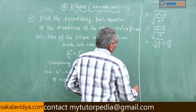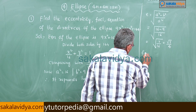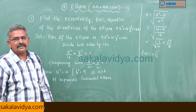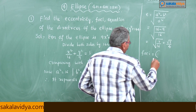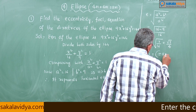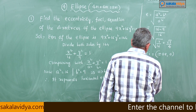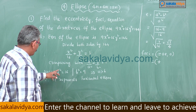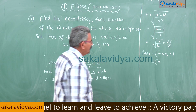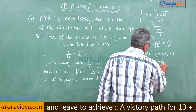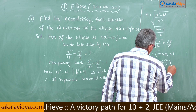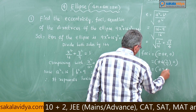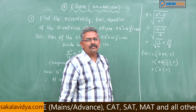Now for the foci: since it is a horizontal ellipse, the foci are at (±ae, 0). Here a = 4 (since a² = 16) and e = √7/4, so ae = 4 × √7/4 = √7. Therefore the foci are at (±√7, 0).